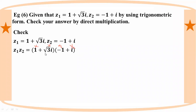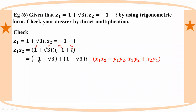We have: S1·S2 minus y1·y2, and S1·y2 plus S2·y1. So: root 3 minus 1 plus root 3, with S1·y2 equal to 1 and S2·y1 equal to minus root 3·i. Therefore S1·S2 minus y1·y2 is minus 1 minus root 3, and y2·y3 root 3 plus x2·y1 is minus root 3. This is the final result.